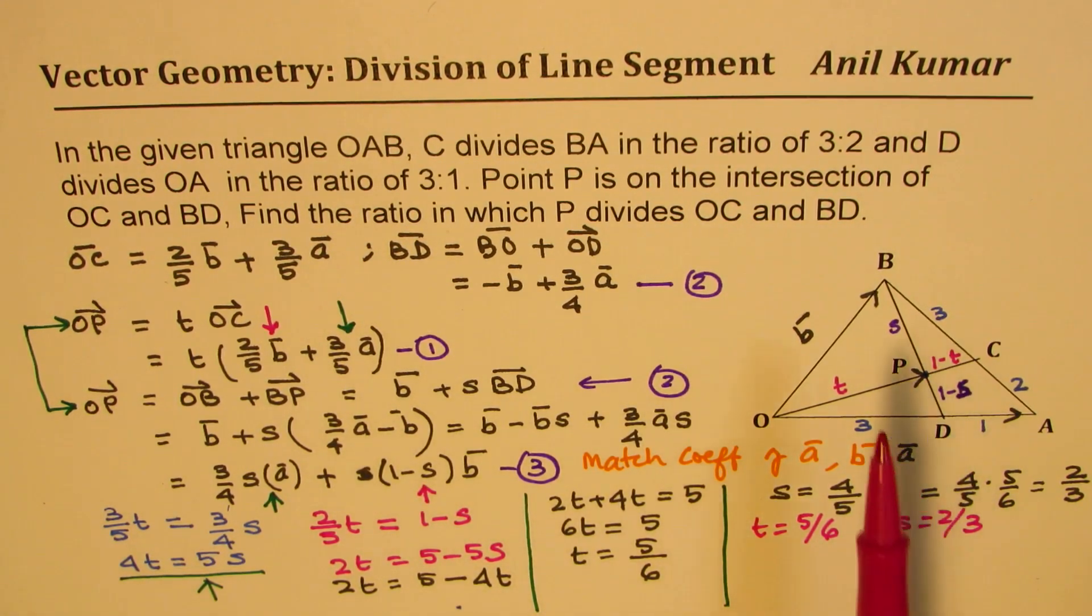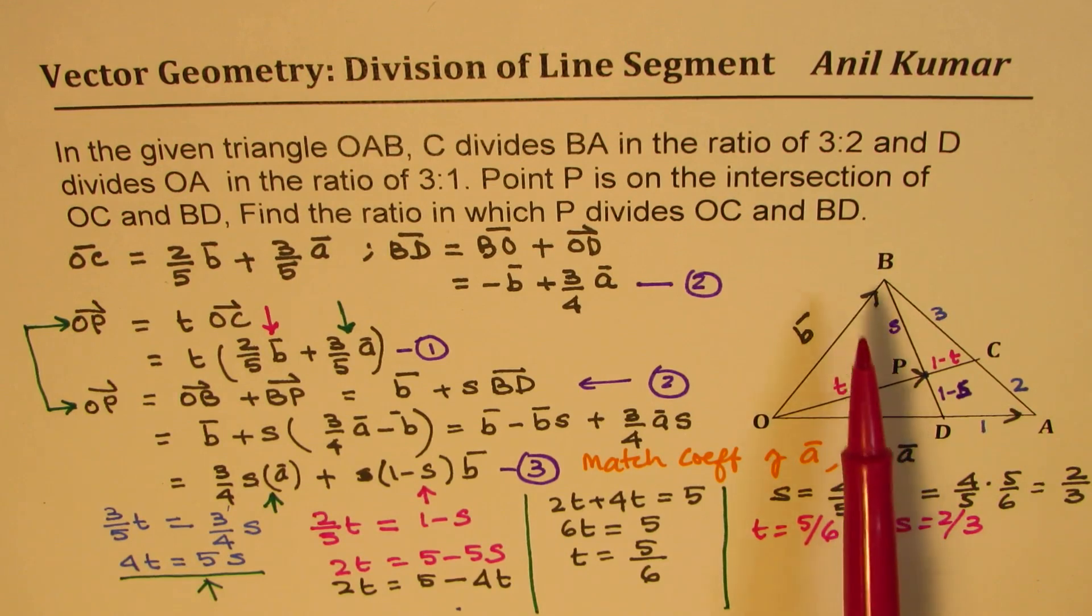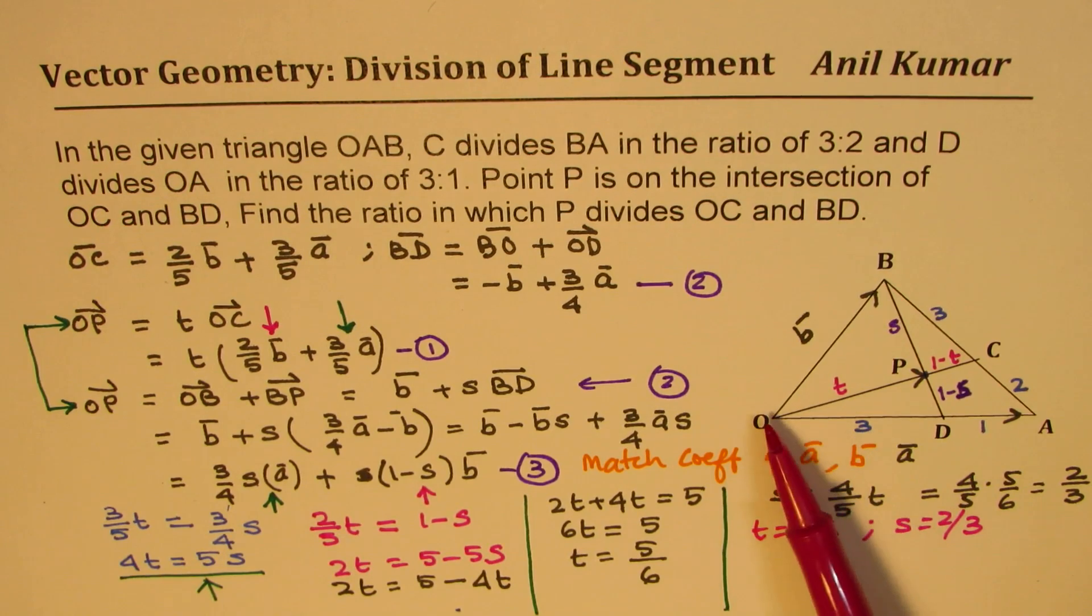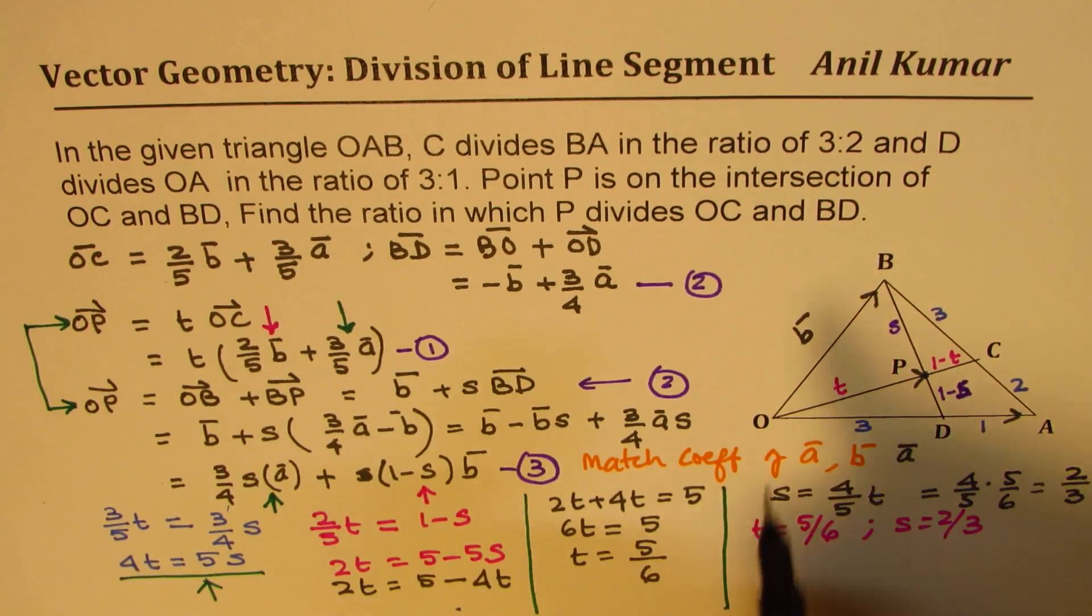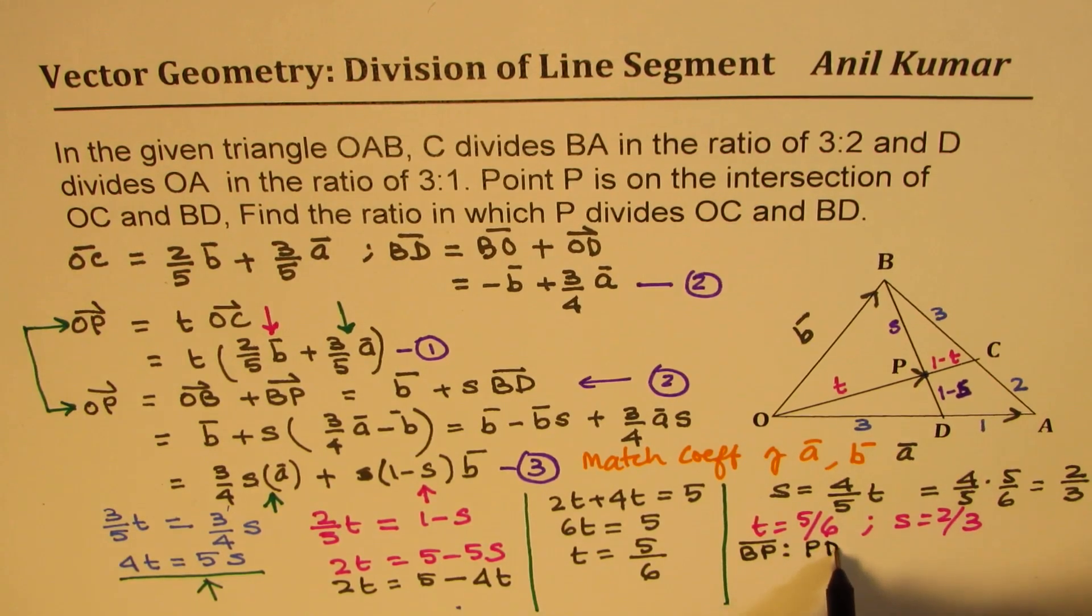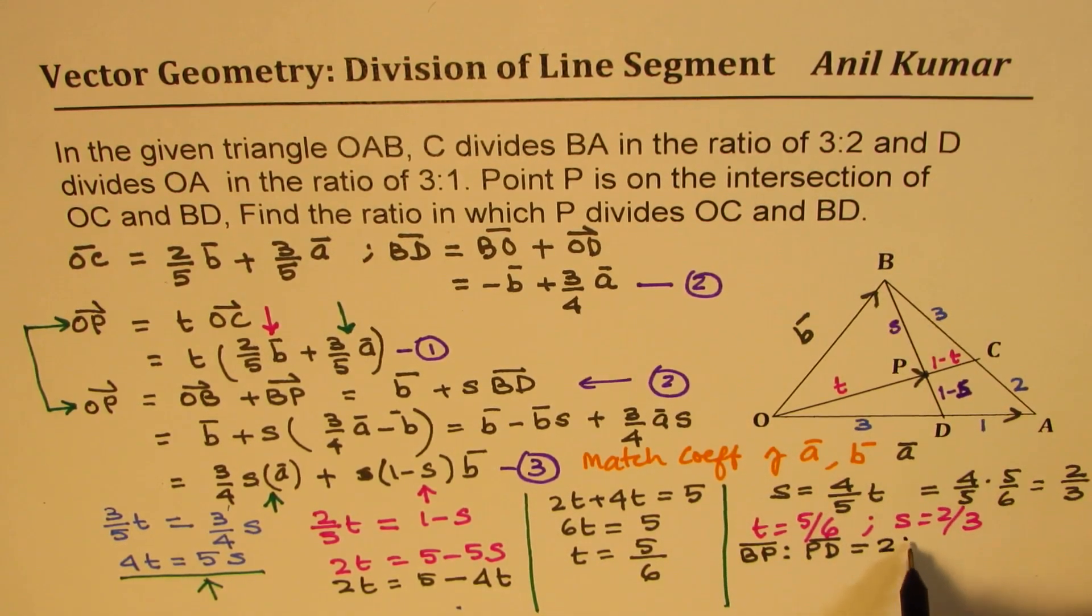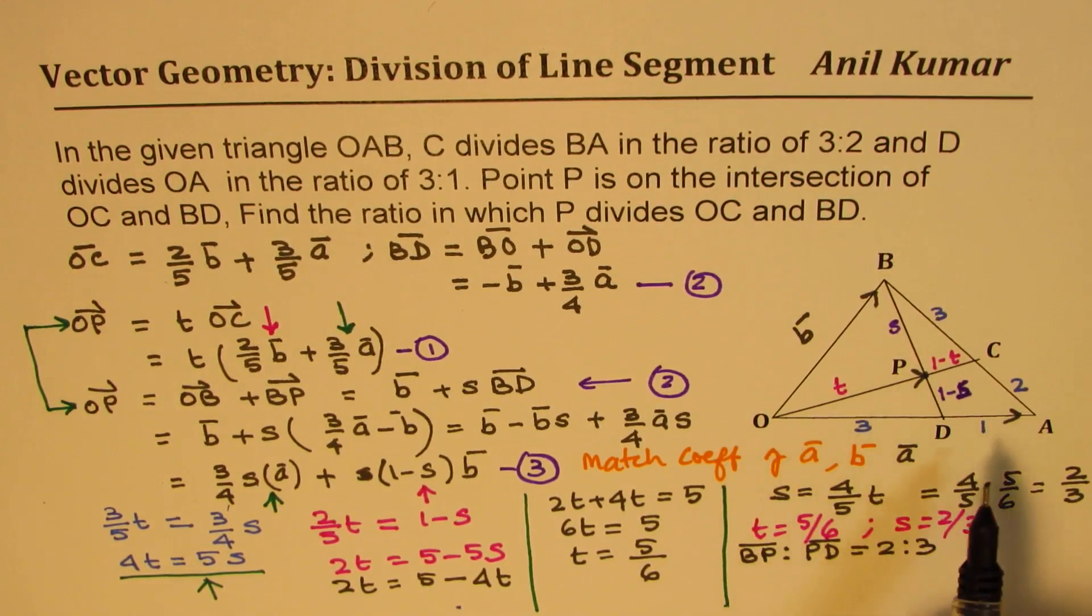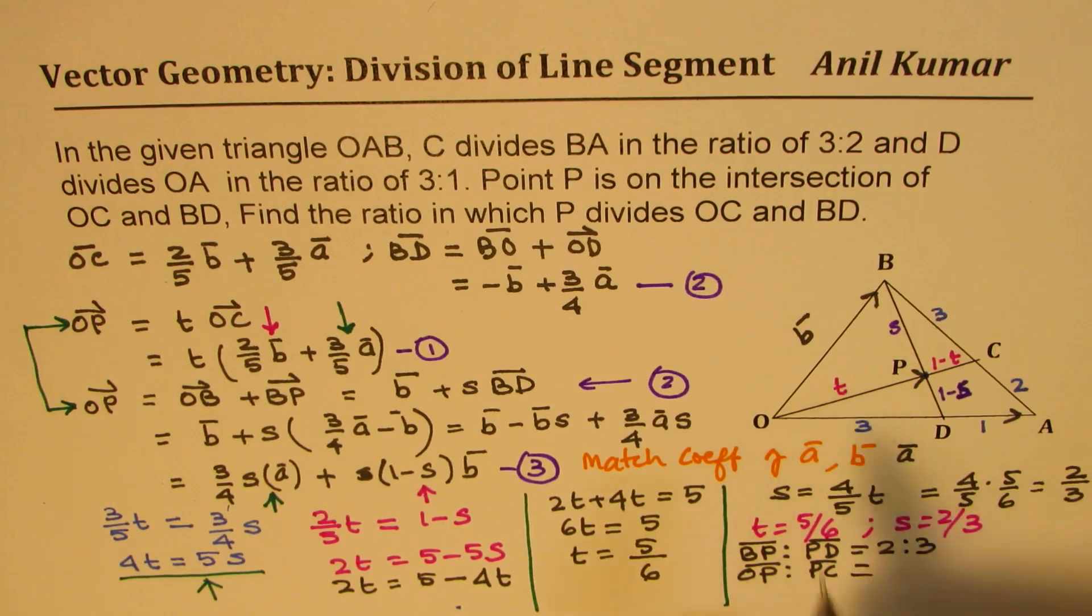So we get both the values, we get T equals 5/6, and we get S equals 2/3. You get the idea? So the value of S is 2/3. That means this ratio will be 2:1, right? 2/3. So total will be 3, out of which S is 2. And here 5 is to 6. So T is 5. So we can now say that the answer is that the ratio BP to PD, so this side, is equal to what? S is 2/3, so this portion is 2. The total is 3, so it is 2:1. Is that clear? The other one, which is OP to PC is what? OP to PC will be what? So T is 5/6, so out of 6 equal division, 5 is this, so it is 5:1. You get an idea? So that is what the answer should be.